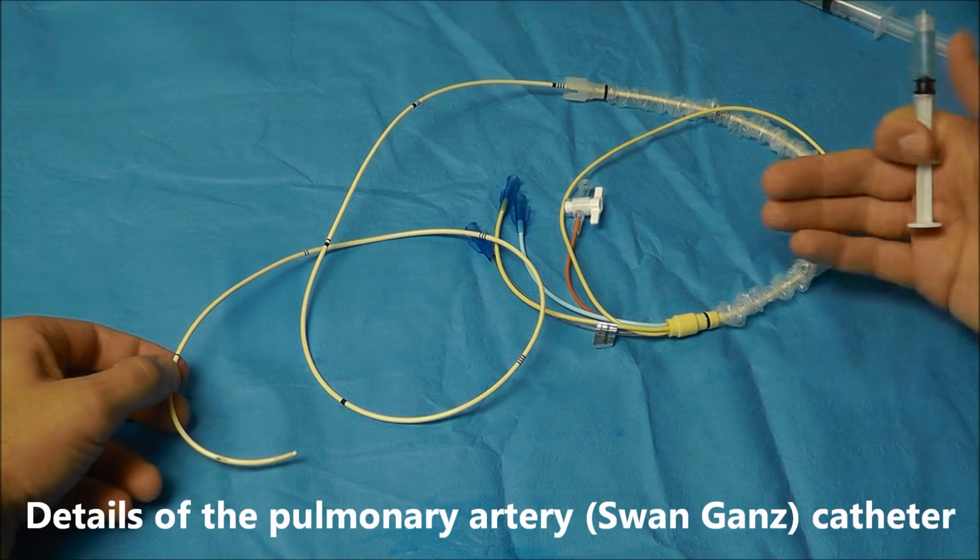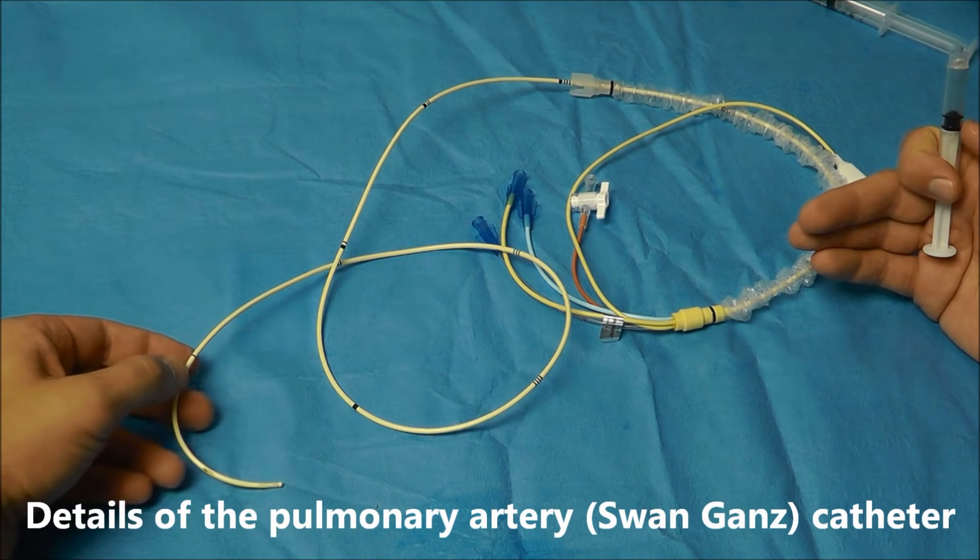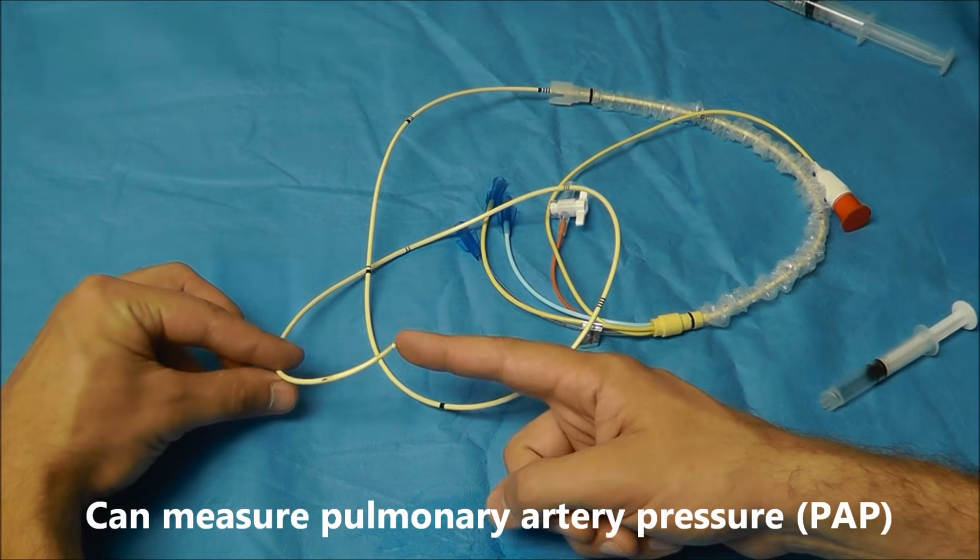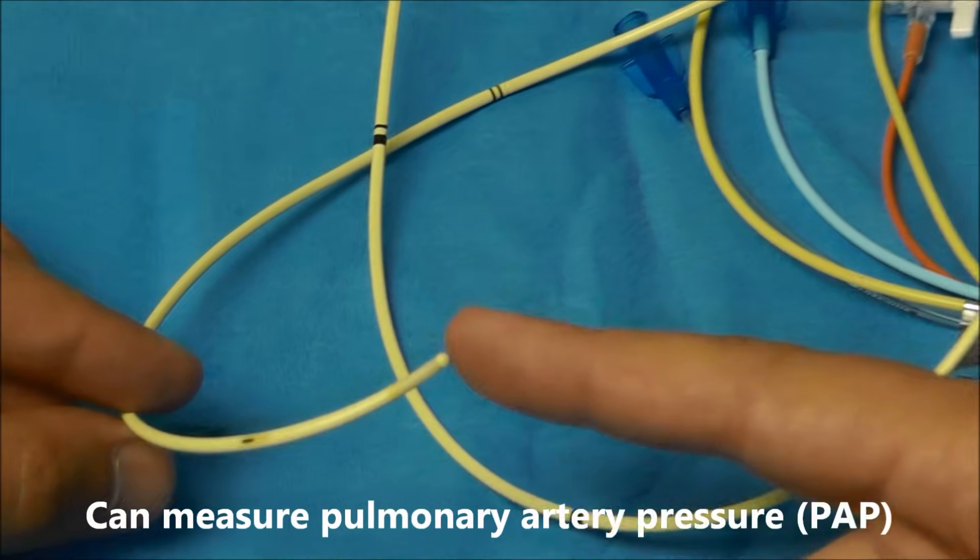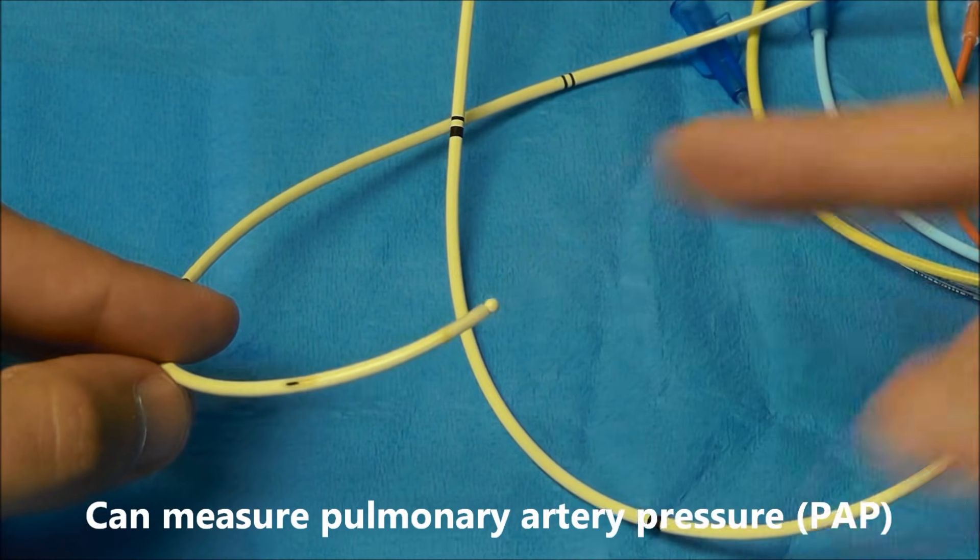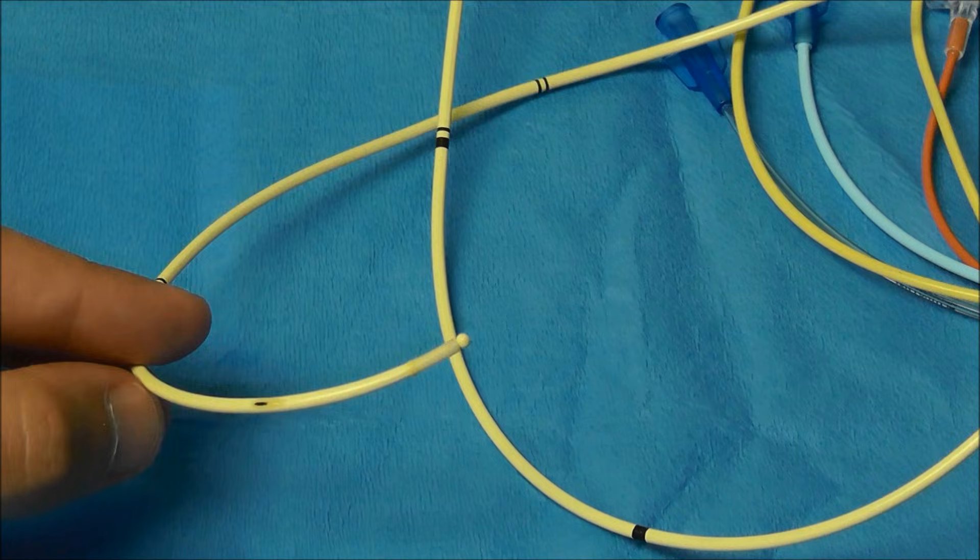Now I'd like to cover the pulmonary artery catheter here a little bit. Basically, the distal tip of this pulmonary artery catheter is designed to sit in the pulmonary artery so it can actually measure pulmonary artery pressure.